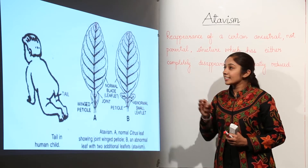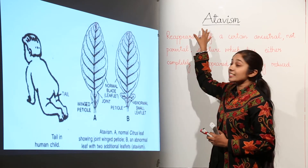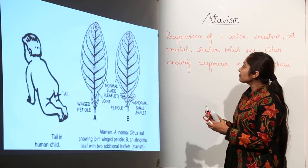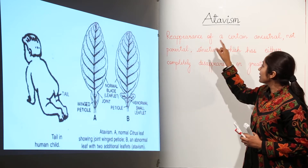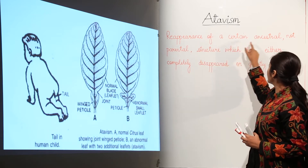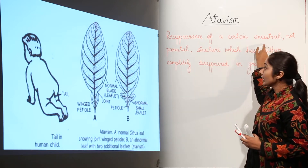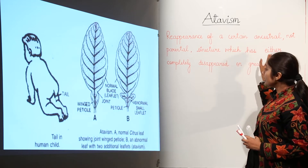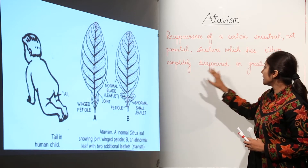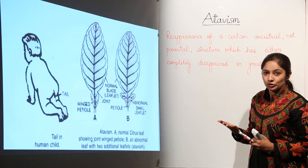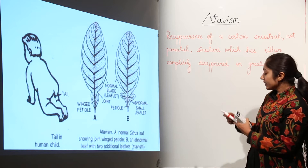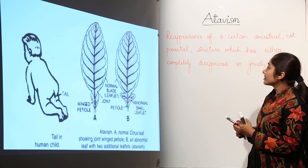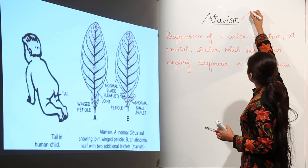Let us discuss now the term atavism. Atavism means reappearance of a certain ancestral — not parental — structure which has either completely disappeared or greatly reduced. This word atavism means reversion or throwback.